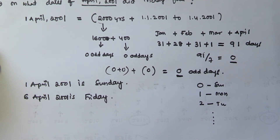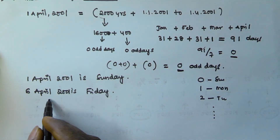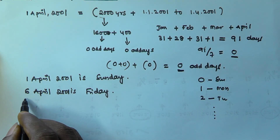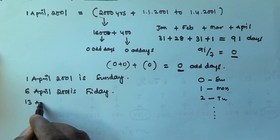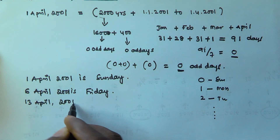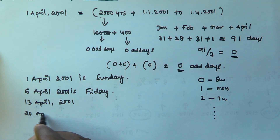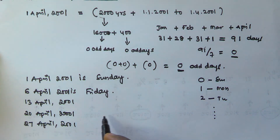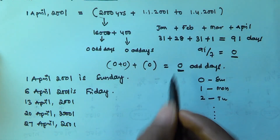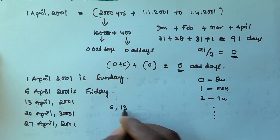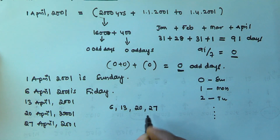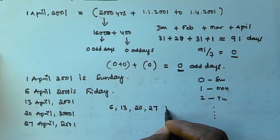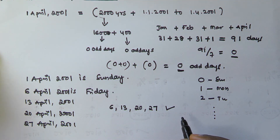We know that a weekday is repeated after every 7 days. So if 6th April 2001 is Friday, then 13th, 20th, and 27th April 2001 are also Fridays. So the dates on which Friday falls in April 2001 are: 6, 13, 20, and 27. That's 4 Fridays. I hope you got this — thank you very much for watching, and please subscribe to my channel.